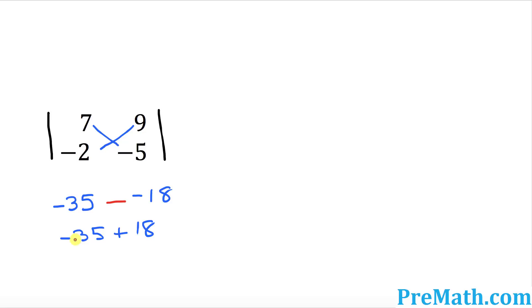Now we have unlike signs that means we're going to subtract and keep the sign of the larger number. So that's going to turn out to be negative 17 and that's it. Thanks for watching.